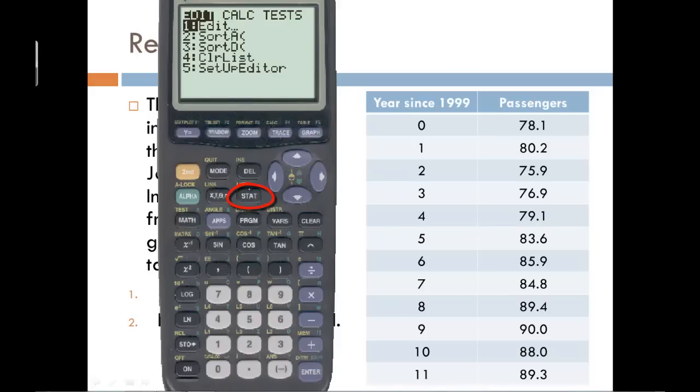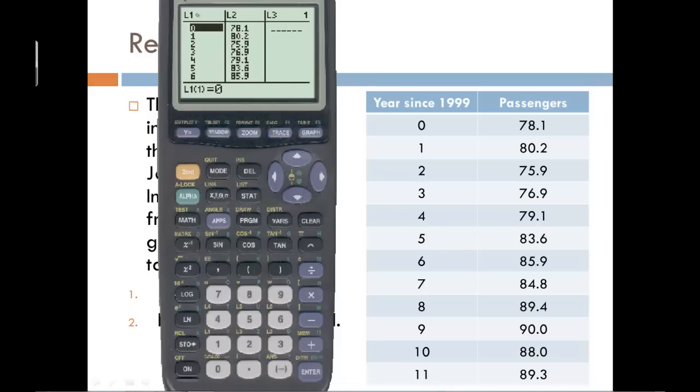And then once in that menu, we need to go into the edit mode, which is the first option there. And we should see a table appear, and yours is probably empty at this point. But you should see a column for L1 and a column for L2 and even L3, and there's more. You just see three at a time. We're just going to use list 1 and list 2, or L1 and L2 columns.